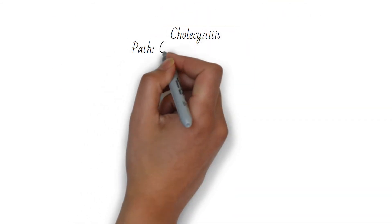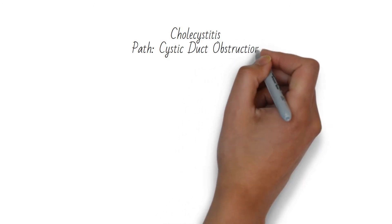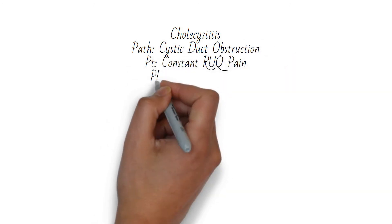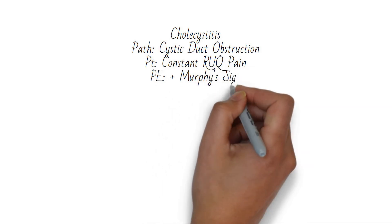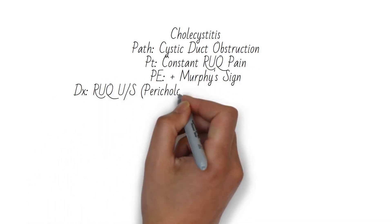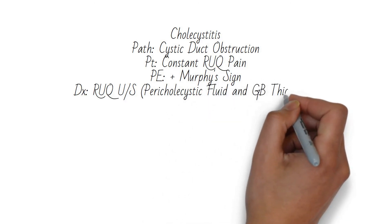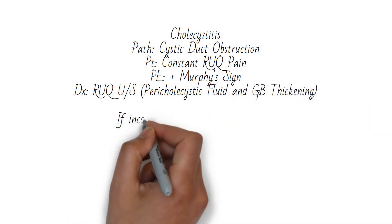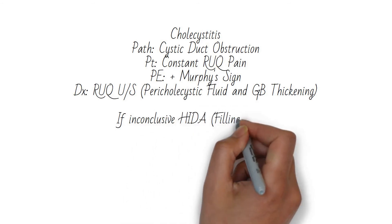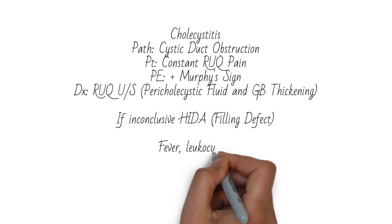Cholecystitis is caused by obstruction of the cystic duct. The patient will have a fever, and their right upper quadrant pain will be constant. They will have a positive Murphy sign, and their right upper quadrant ultrasound may show pericholecystic fluid and gallbladder thickening. If ultrasound is not enough to make the diagnosis, a HIDA scan will show a filling defect of the gallbladder. CBC may show leukocytosis.